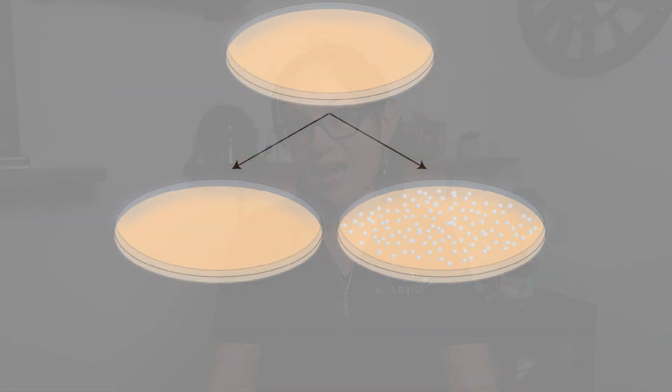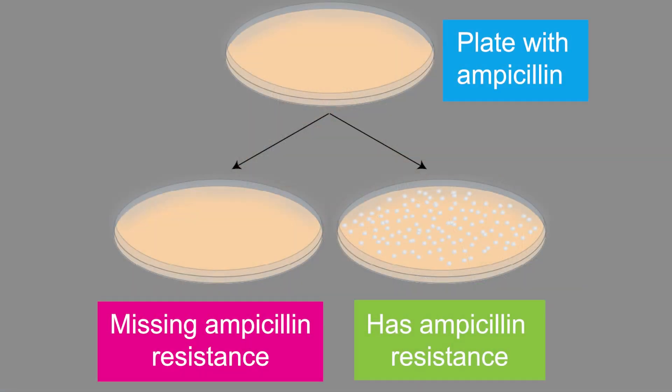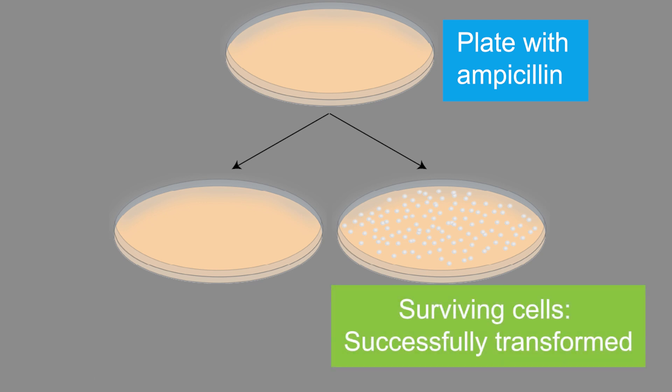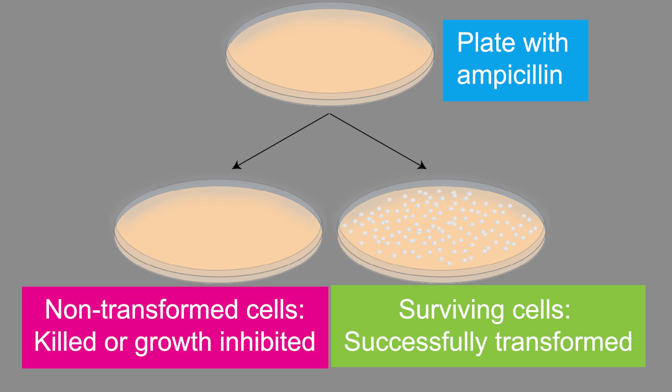Once you plate your cells, you would do this on media that contains the antibiotic your vector had the resistance gene for. For instance, if your vector had resistance for ampicillin, then you would plate your cells on a plate with ampicillin. The cells that are capable of growing on this plate have resistance to the antibiotic, meaning colonies growing on the plate have the vector and were successfully transformed. The cells that weren't transformed would be killed or their growth would be prevented by the antibiotic. What's great about antibiotic selection is that the antibiotics eliminate what you don't want and everything left over is what you do want.